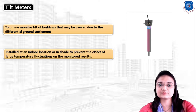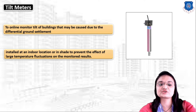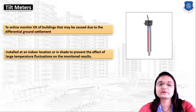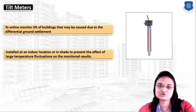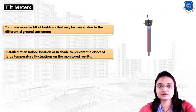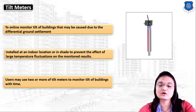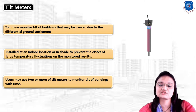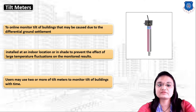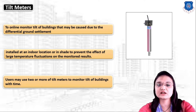We have to install this tilt meter at an indoor location or in shade to prevent the effect of large temperature fluctuations on the monitored method. In civil engineering, in any area, we can use a tilt meter to measure the tilt of any building structures.